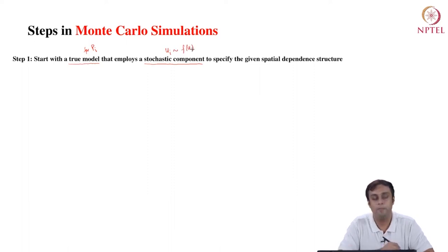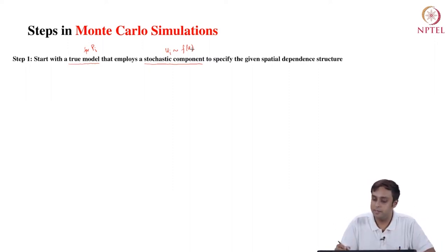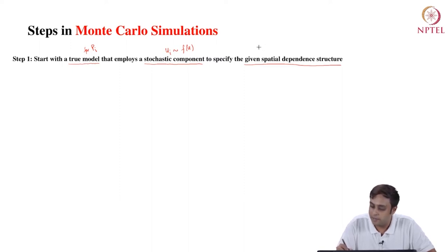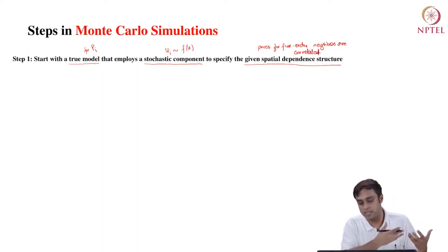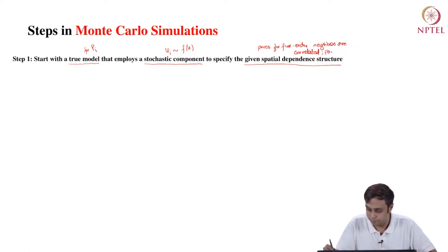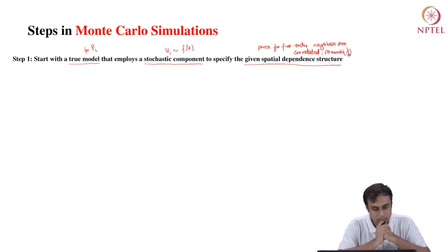We can specify U_i with PDF f(u). When we say stochastic component, we basically mean a random variable U_i. It is supposed to encapsulate the given spatial dependence structure — meaning that prices for first-order neighbors are correlated. The degree of correlation was specified with parameter λ. We need to parametrize λ using this variance-covariance matrix or correlation P_i–P_j structure that was specified in the practice problem earlier.